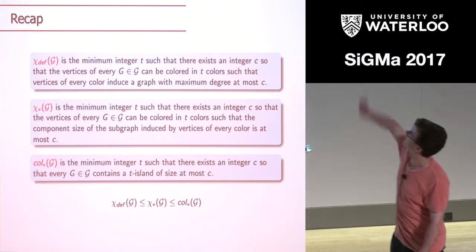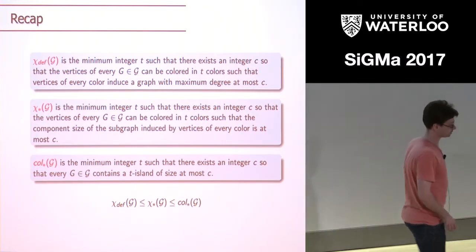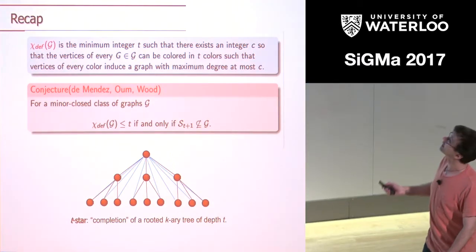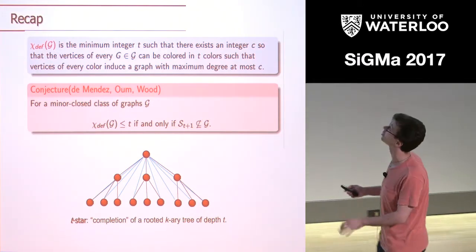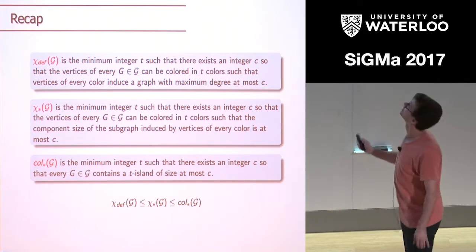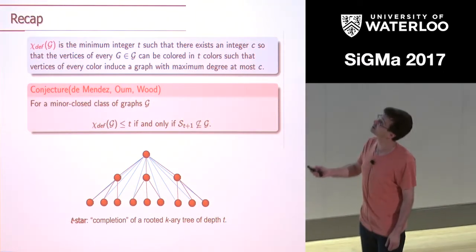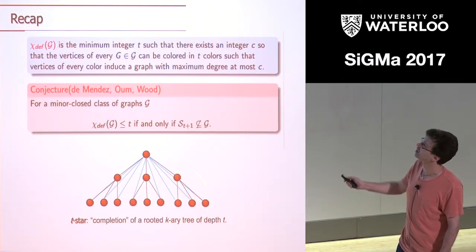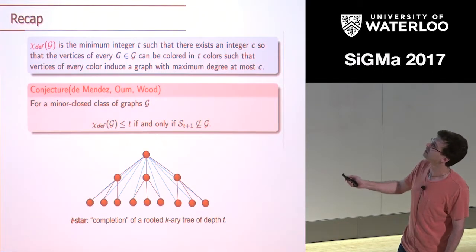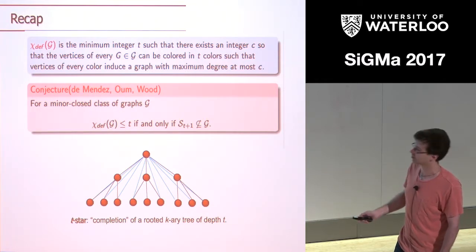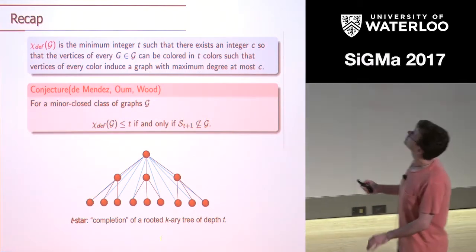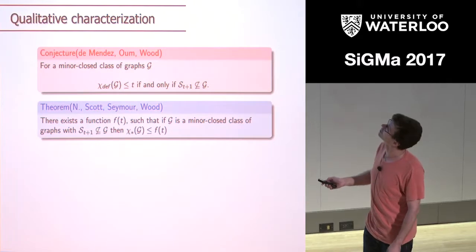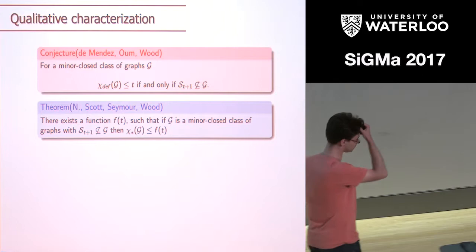I want exact conjectures for other coloring parameters. For this I introduce the notion of decoration. Take a graph G and a subset of vertices S. I say I'm gluing a graph H along this subset: take H and join every vertex of S to every vertex of H. A decoration of G by a class H is done as follows: take G, select all cliques in it, and on every clique glue many graphs from your favorite class H. The operation G decorated by H is the class of all minors of H-decorations of graphs in G. This operation is not commutative but is associative.